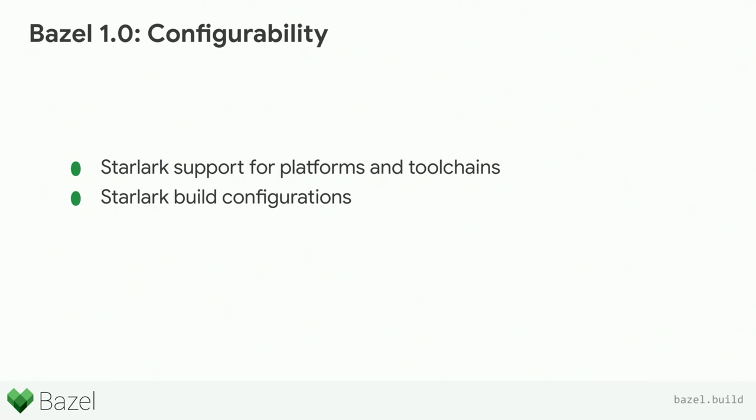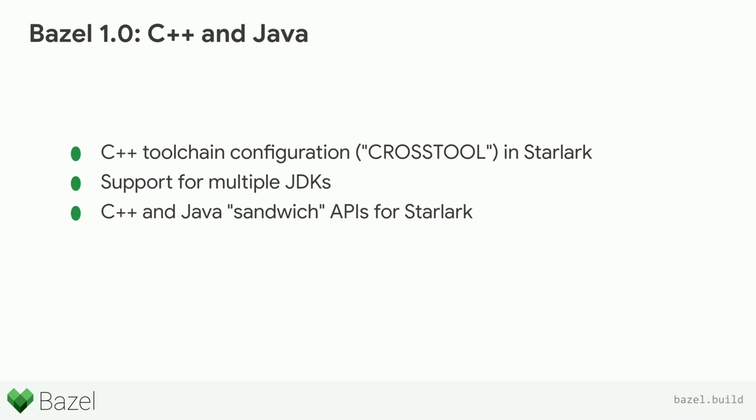We've made a bunch of upgrades to our C++ and Java support. C++ toolchains are incredibly complicated. There's a concept in Bazel called cross tool, which is our configuration mechanism for C++. Previously there was an arcane internal way to configure cross tools. Now this is all part of Starlark, so there's nothing special you need to know. Configuration is still a hard problem, but the barriers to entry for configuring a new C++ toolchain have diminished.